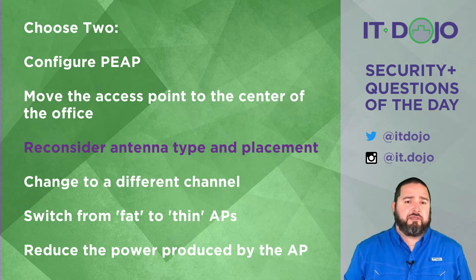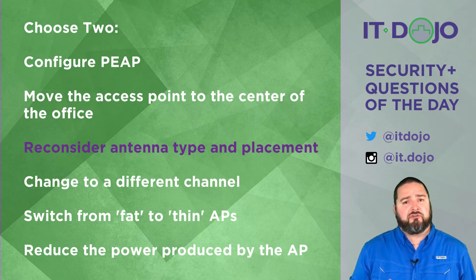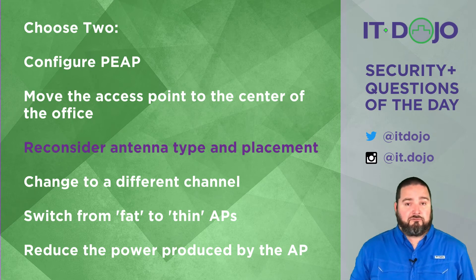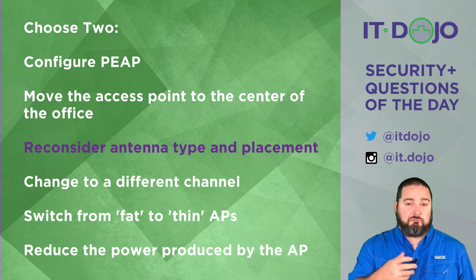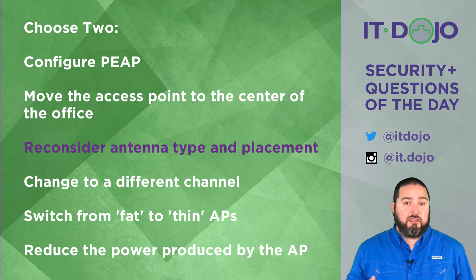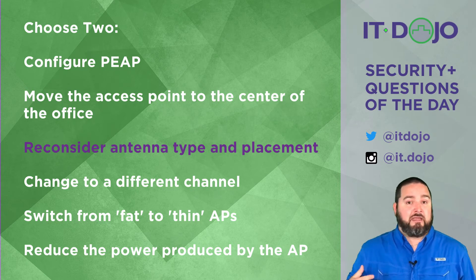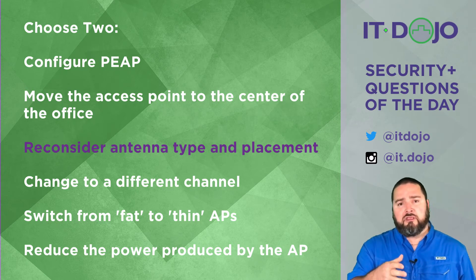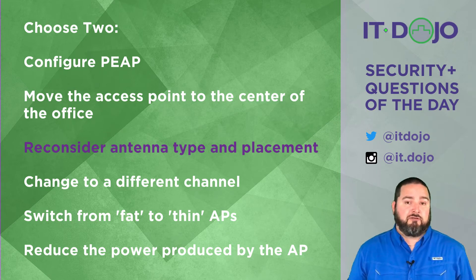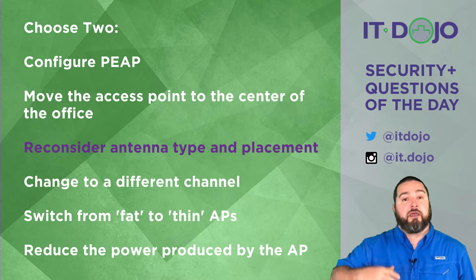How about moving from so-called fat APs to thin APs? Fat APs are access points with a lot of logic built in, whereas thin APs are essentially just radios that tunnel their traffic back to a wireless LAN controller deeper in your network. In neither case does the access point being fat or thin have much to do with the actual propagation pattern of your radio energy — it has to do with where connections are maintained and managed. So no, fat or thin APs aren't going to help with your coverage patterns.